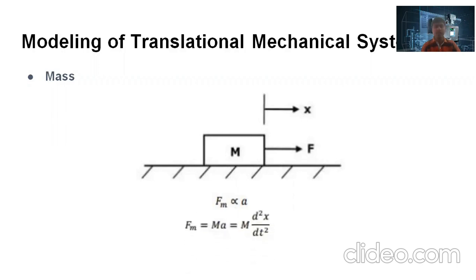When the force is applied, the equal and opposing force acting on the body is directly proportional to the acceleration. Therefore, Fm is equal to M into A, where M is the mass of the body and A is the acceleration. As acceleration is the second order derivative of displacement x, we can substitute d²x/dt² instead of A. Therefore, the force balance equation gives F = Fm = M · d²x/dt².